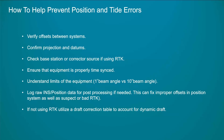To summarize: verify your offsets, confirm the projection and datum, check your base station, make sure all equipment is timed and synced properly, and understand the limits of your equipment — don't exceed them, whether that's weather or positional accuracy. Always log all the data you can, including raw INS data even if you don't have the software to process it — because if you don't have it and you need it, you can always find somebody to process it. And if you're not using RTK, you're going to have to utilize a draft table.